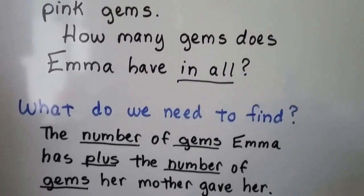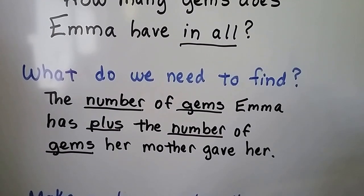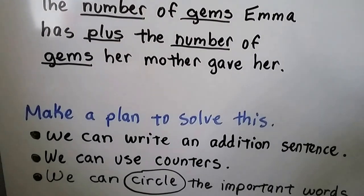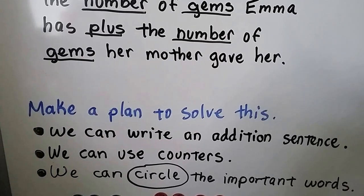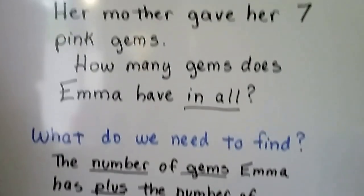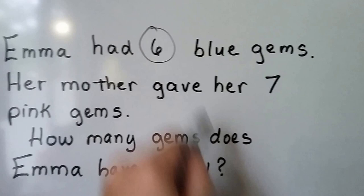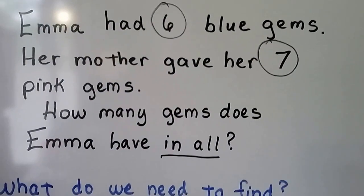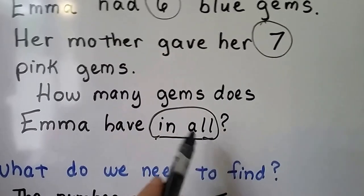The first thing we do is figure out what we need to find — the number of gems Emma had plus the number of gems her mother gave her — and we make a plan to solve this. We can write an addition sentence, use counters, and circle the important words. She had six blue gems — that's important. Her mother gave her seven. And 'in all' is important because it tells us we need to add.